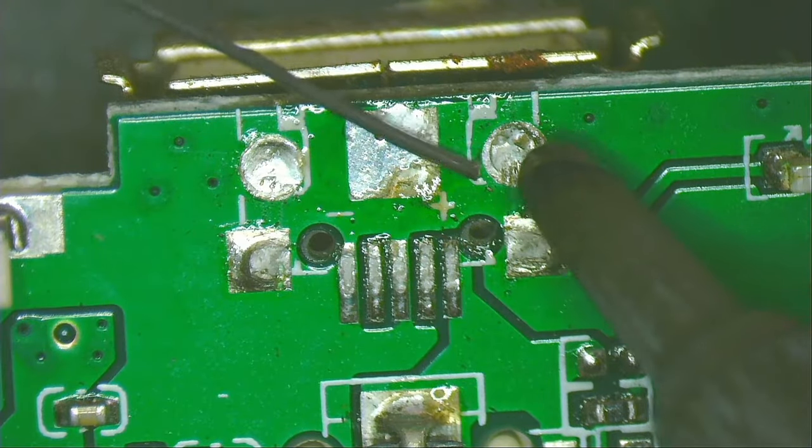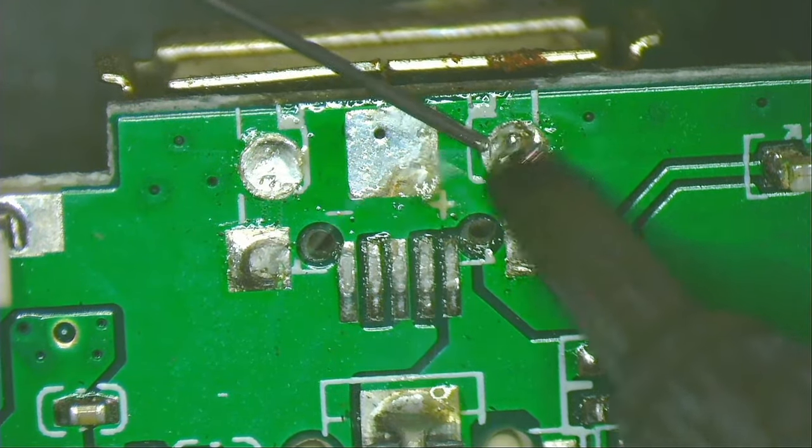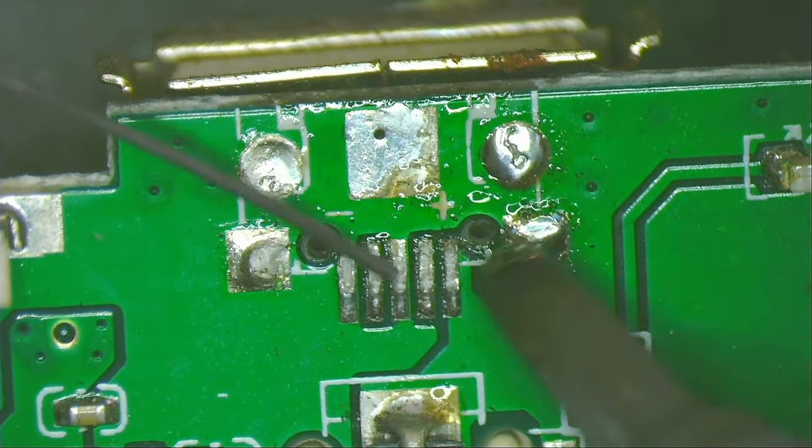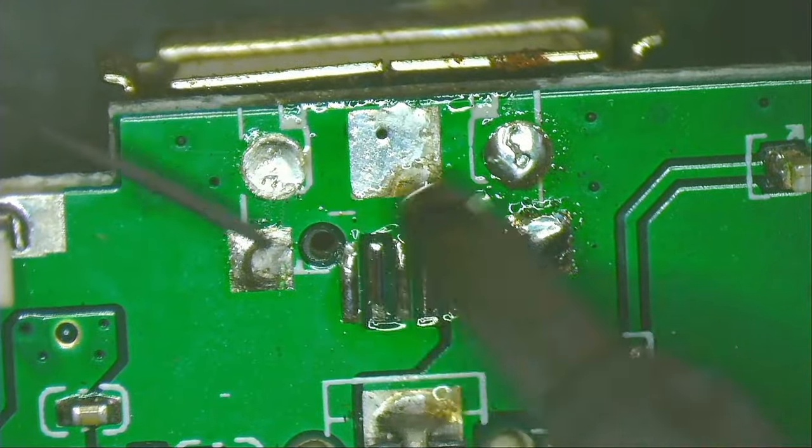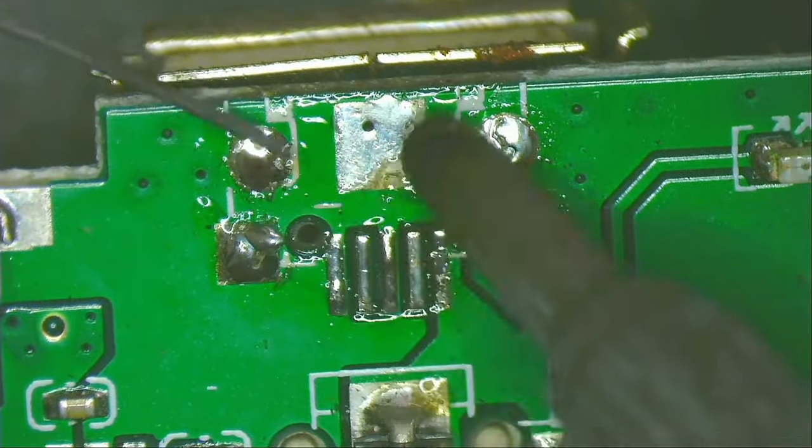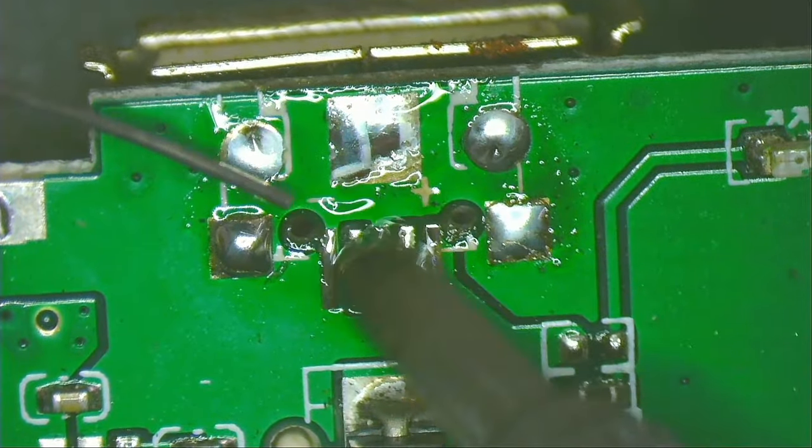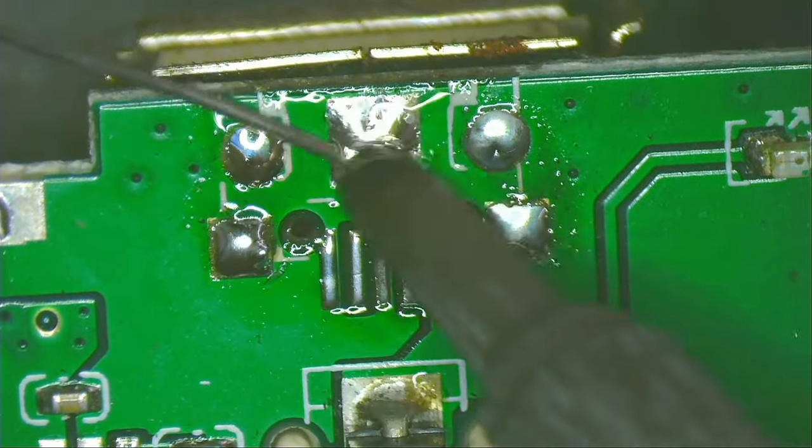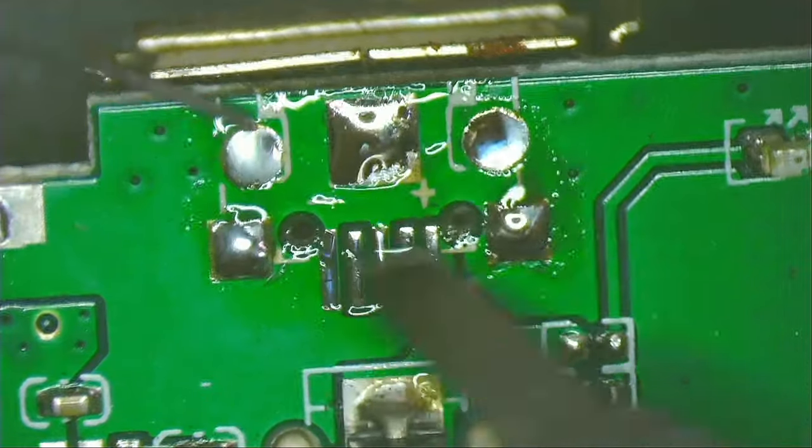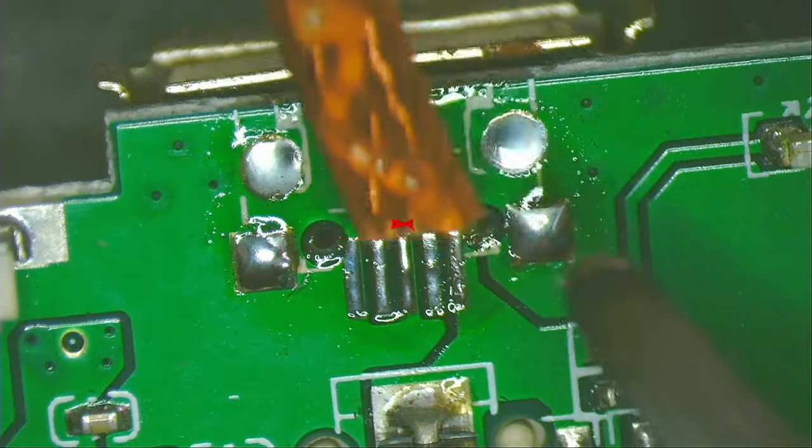Now I combine leaded solder with the lead-free solder on the board. This solder is an alloy that is 63% tin and 37% lead. The melting point of this solder is 183 degrees Celsius. This temperature is lower than the temperature required for lead-free solder used in electronics factories.